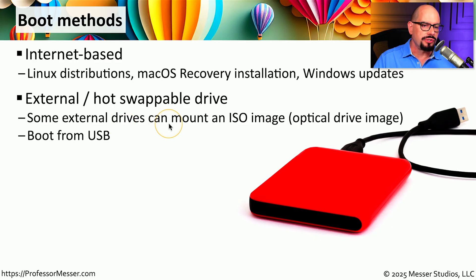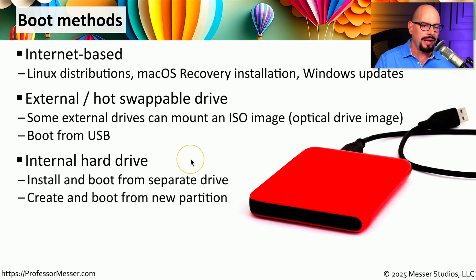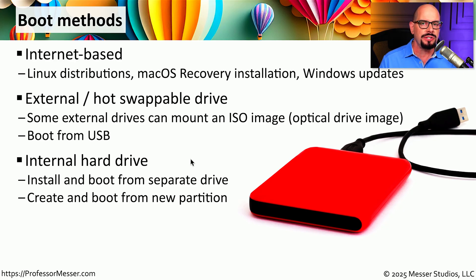Since this is on an external drive, you can disconnect it from one computer, take it to another computer, and perform another installation. The same installation files on the external or hot-swappable drive could also be copied to an internal drive. This means all of the installation files would be available on a local partition on your computer, and you simply boot from that partition and install your operating system into a separate partition on that system.